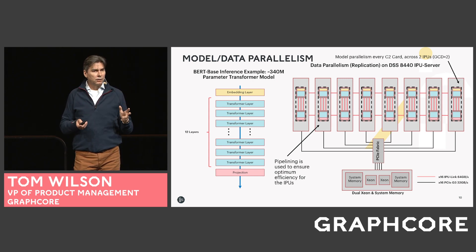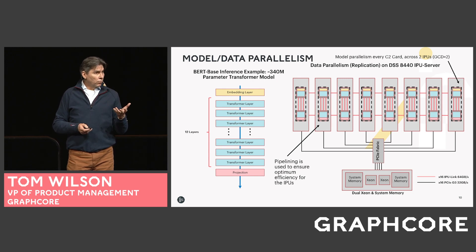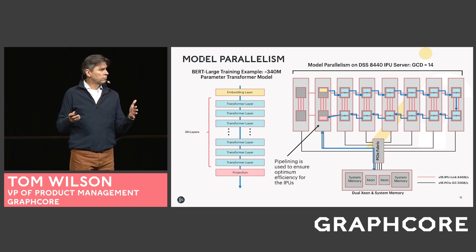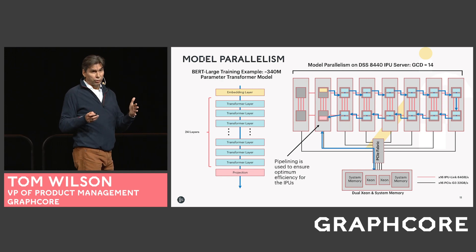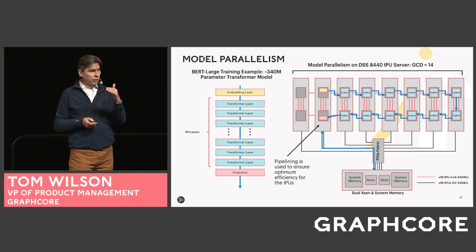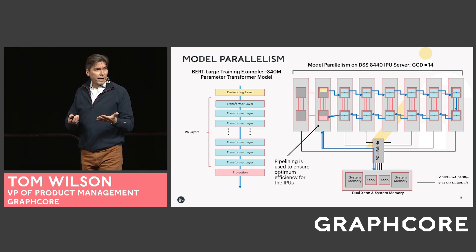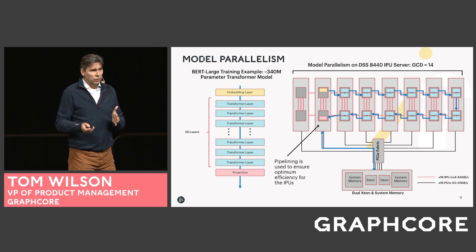Since the model is sharded across two IPUs, pipelining is really important to ensure maximum efficiency and that IPUs are utilized as optimally as possible. For example, one approach for BERT-Large training is to assign a Graph Compile Domain of 14 IPUs, and then the Poplar SDK through GCD will map the BERT-Large model across 14 of the IPUs in your Dell server — and it just works.